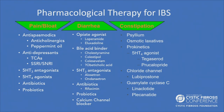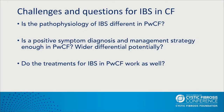For constipation-predominant IBS in CF: psyllium, osmotic laxatives, prokinetics, and 5-HT4 agonists such as tegaseride or prucalopride, chloride channel agonists such as lubiprostone, and guanylate cyclase agonists such as linaclotide or plecanatide. These are possible therapies, but there are certainly challenges and questions for diagnosing IBS in CF. Is the pathophysiology of IBS different in persons with cystic fibrosis? Is this really CF-related constipation or diarrhea? And do IBS treatments work as well in the CF population? These are all unanswered questions.